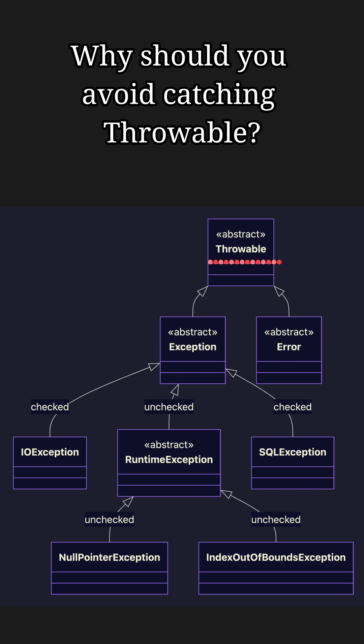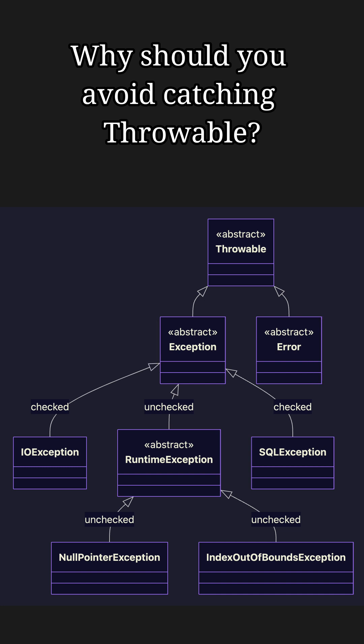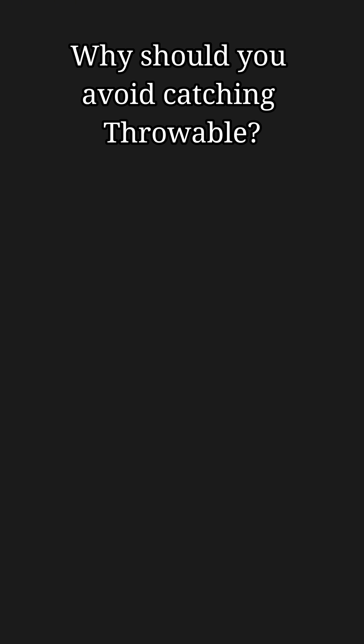In Java, Throwable is the root class of all errors and exceptions. It has two main subclasses: Exception, which represents conditions your program might reasonably recover from, and Error, which represents serious unrecoverable problems like OutOfMemoryError or StackOverflowError. Catching Throwable means you are handling both exceptions and errors.